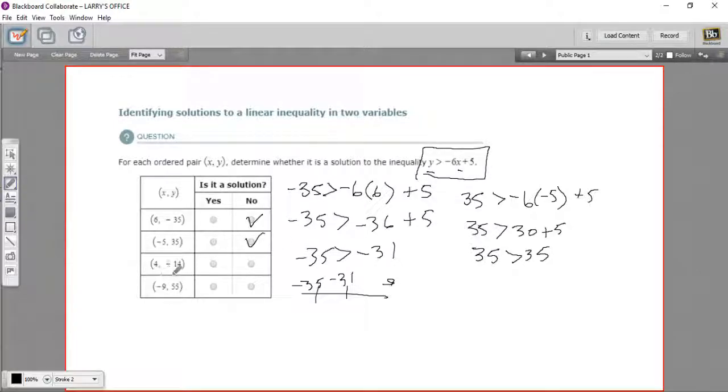Let's try this next one, 4 and negative 14. So negative 14 for the y, and then negative 6 times 4 for the x, and then plus 5. So here we have negative 14 greater than, and negative 6 times 4 is negative 24, plus 5. So what's negative 24 plus 5? Well, that's negative 19. So the question is, is negative 14 greater than negative 19?